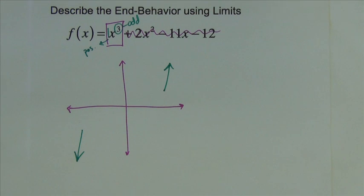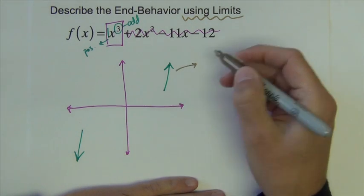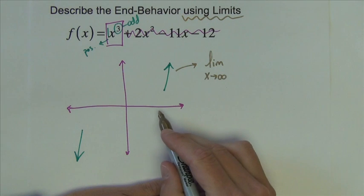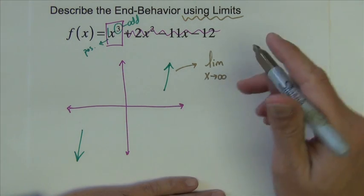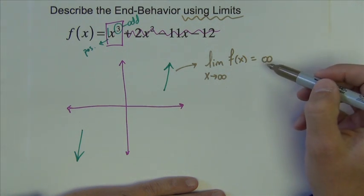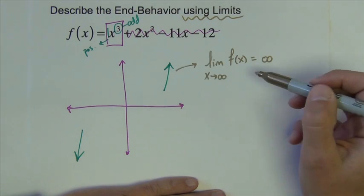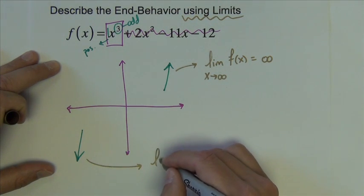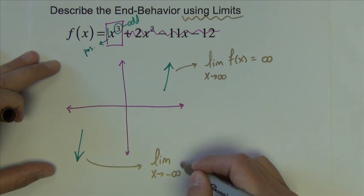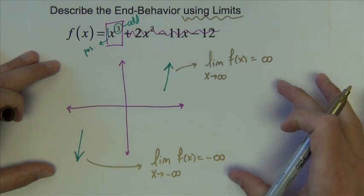What we'd like to do is describe this end behavior using limits. The limit as x approaches infinity of f(x) equals infinity, because we're going to the right and the function is going up. And the limit as x approaches negative infinity of f(x) equals negative infinity, because going to the left the function goes down. So left and down — that's the end behavior described with limits.